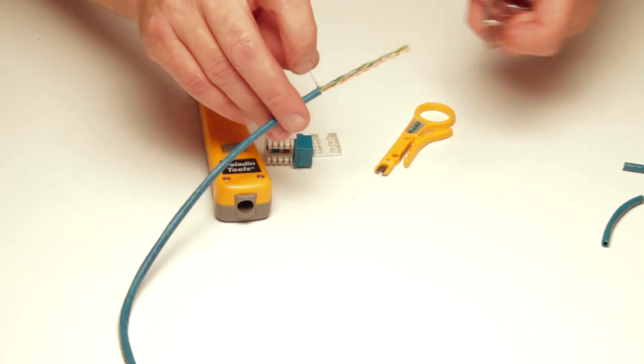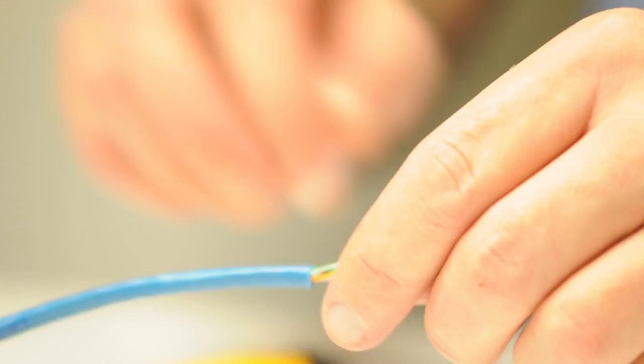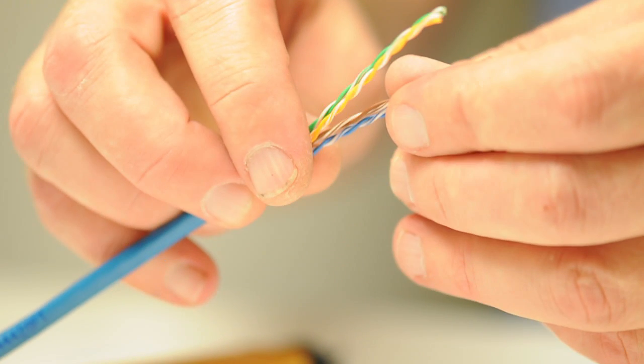With our scissors, we can clip off the string and begin to fan out the pairs. You'll notice that there are four pairs that are color-coded, and we can untwist them and get them ready for use.